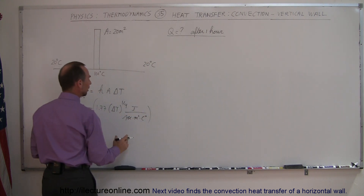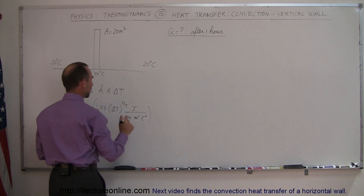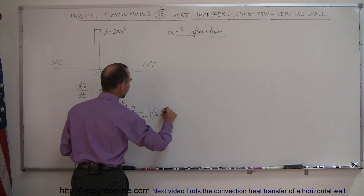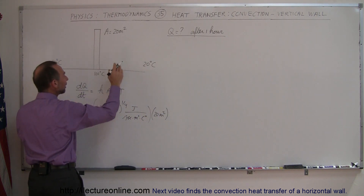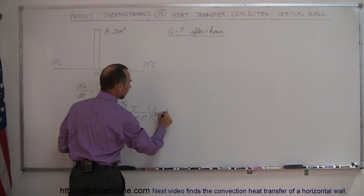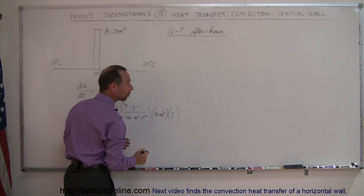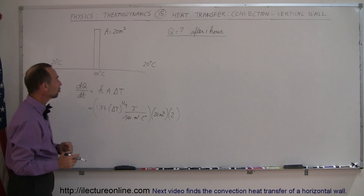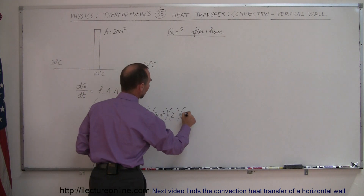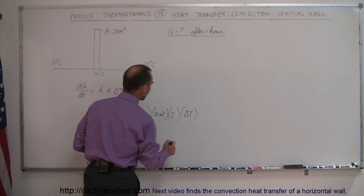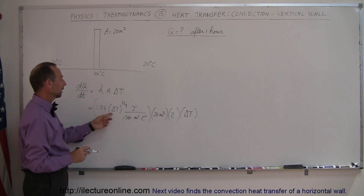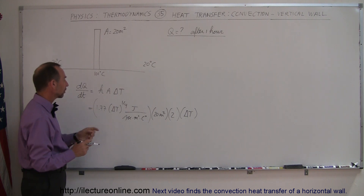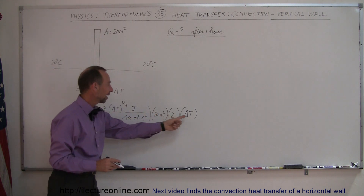So that would be H times the area. The area we have here is 20 meters squared, and notice that the wall can lose heat on both sides, so we have to double this — times 2 because we have two sides of the wall leaking out heat — and times the change in temperature, delta T. We plug in delta T as 100 minus 20, which is 80 degrees centigrade.